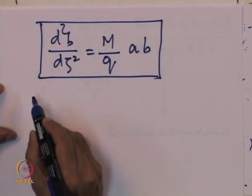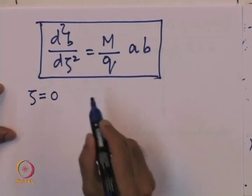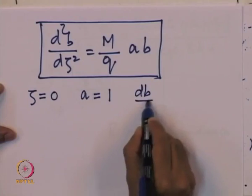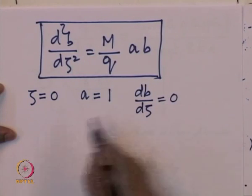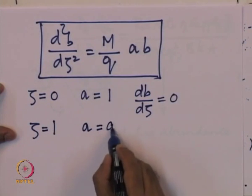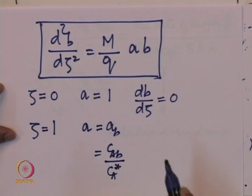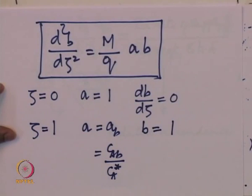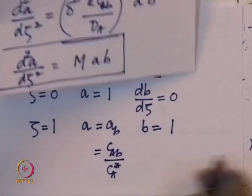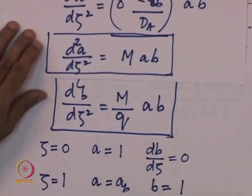The non-dimensional boundary conditions are straightforward. At ζ=0: a=1 and db/dζ=0. At ζ=1 (end of film): a = a_B = C_A(bulk)/C_A*, and b=1. We now have the equations for A and B and their boundary conditions, and we are ready to look at the implications of these equations on the rate of mass transfer.